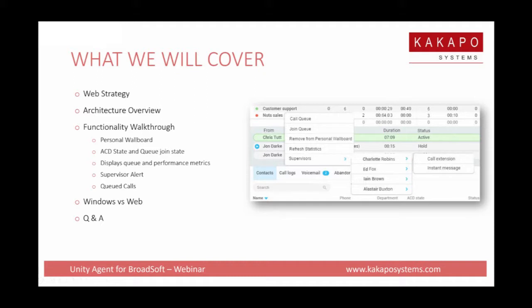At the end of this session we've got a matrix where we'll show how the functionality stacks up between Agent Web and the Windows Agent. One of the reasons we're always going to have both versions is that there are more things we can do with the .NET Windows client — it's a tighter fit with the OS and there's more scope to do more things.